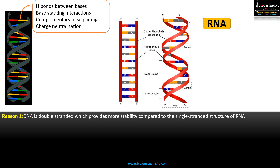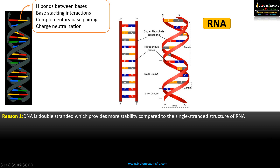Second is base stacking interaction. Base stacking refers to the arrangement of bases — the way in which the bases are placed one above the other in a DNA double helical structure. This is primarily due to hydrophobic interactions and van der Waals forces, which provide extra stability to DNA. Third is the complementarity of base pairing: guanine always pairs with cytosine, and thymine always pairs with adenine — purines, which are two-ringed, always pair with pyrimidines, which are single-ringed — and this perfect orientation provides more stability.